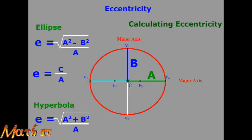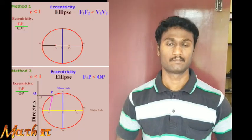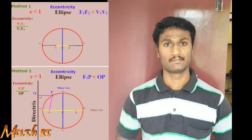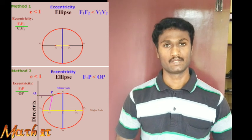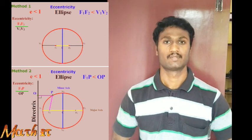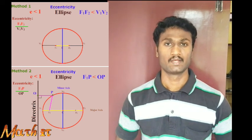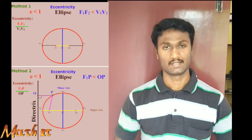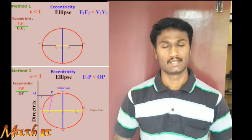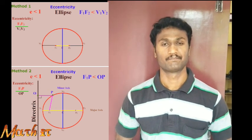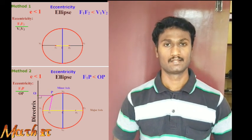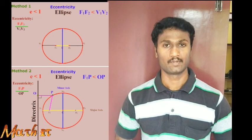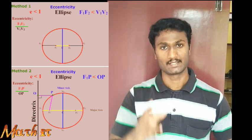In this video, if you want to see eccentricity 0 that is a circle, eccentricity 1 is a parabola. You can observe the eccentricity values for each conic section. Thanks for watching the video. See you soon.